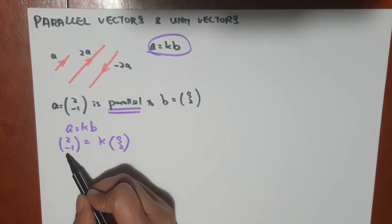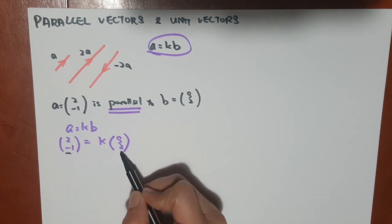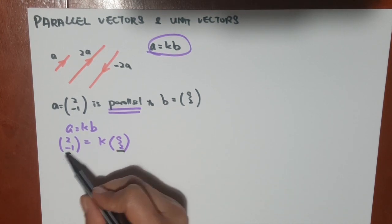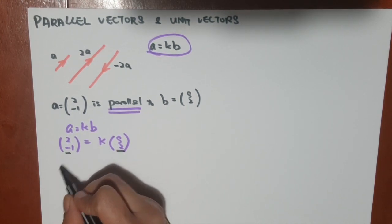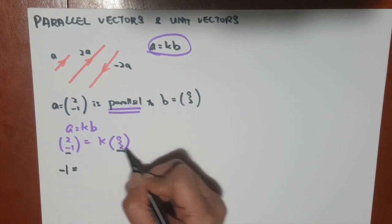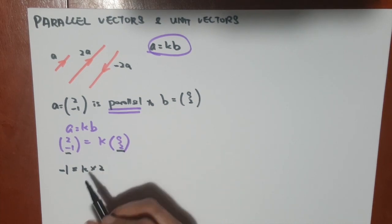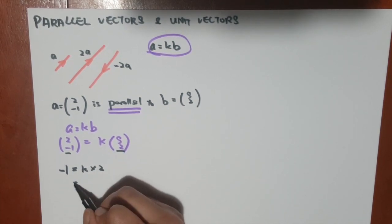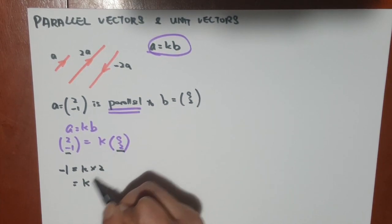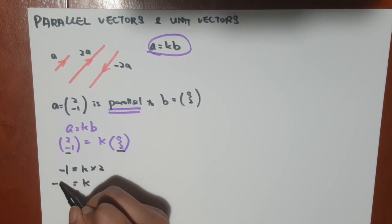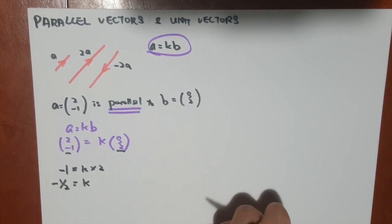So in this equation, it means that -1 equals to k times 2, k times 2. And I know that in order to get my value k, I have to shift my 2 down, so my k is actually a negative half. So once I get the value of my k,